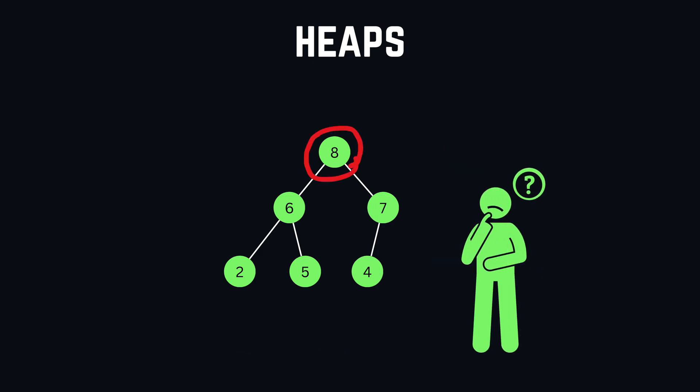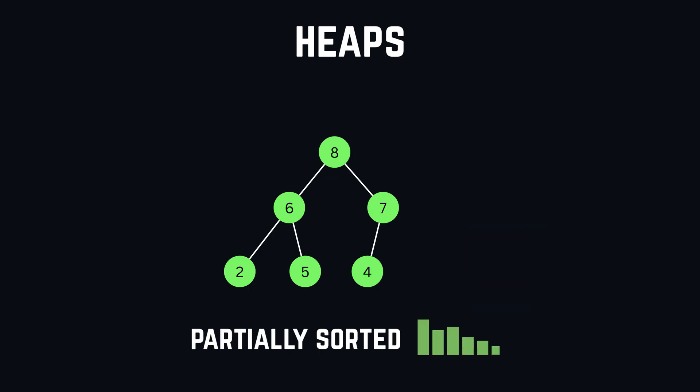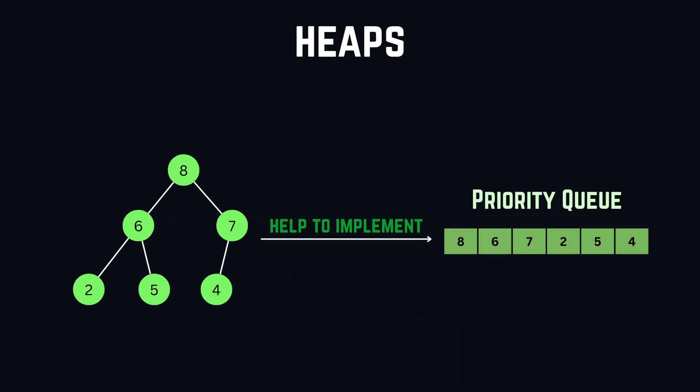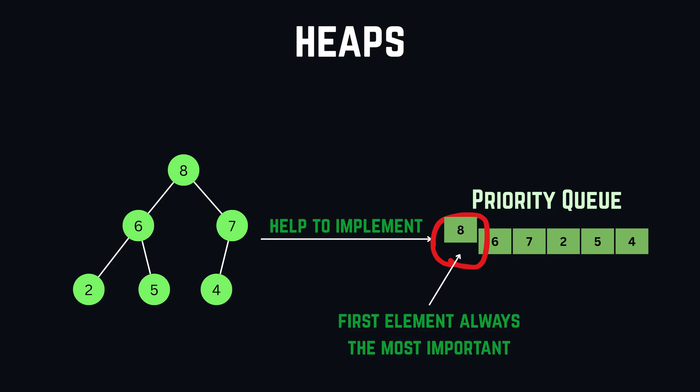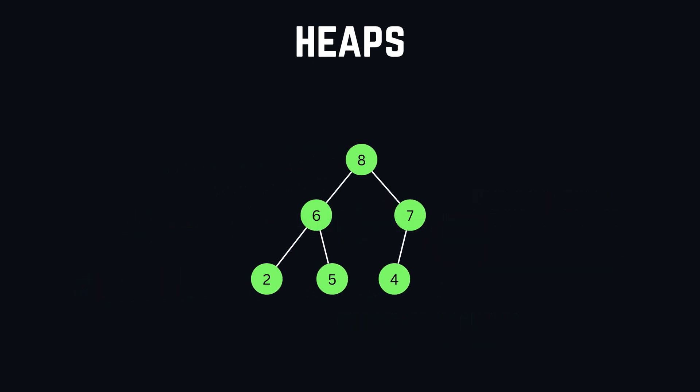The reason we focus on deleting and accessing the root is that heaps, due to their partially ordered structure, are most commonly used to implement priority queues. Priority queues always remove the most important element first — the element with the highest priority — which aligns perfectly with how heaps work, since we remove the root that holds the highest or lowest value.